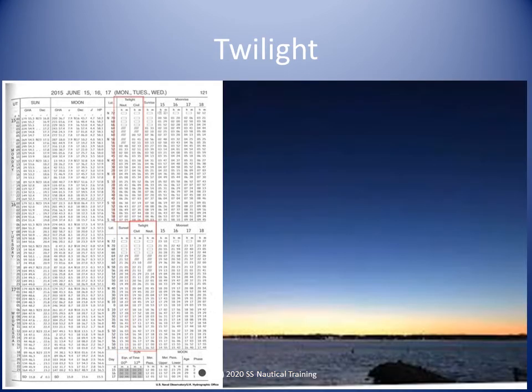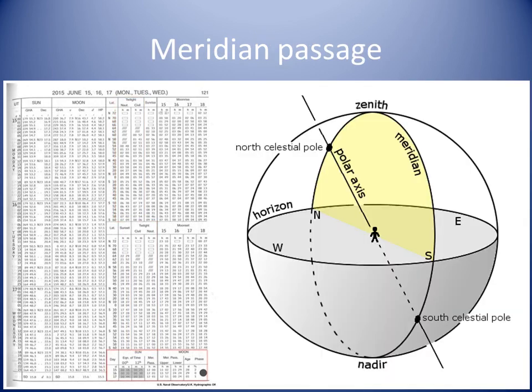The Nautical Almanac provides times for twilight for every day. Twilight is important to navigators because we can see the brighter stars and the horizon at the same time and get a position fix. The altitude of the Sun when it is over the observer's meridian gives the navigator their latitude. The Nautical Almanac also provides times for meridian passage for every day.